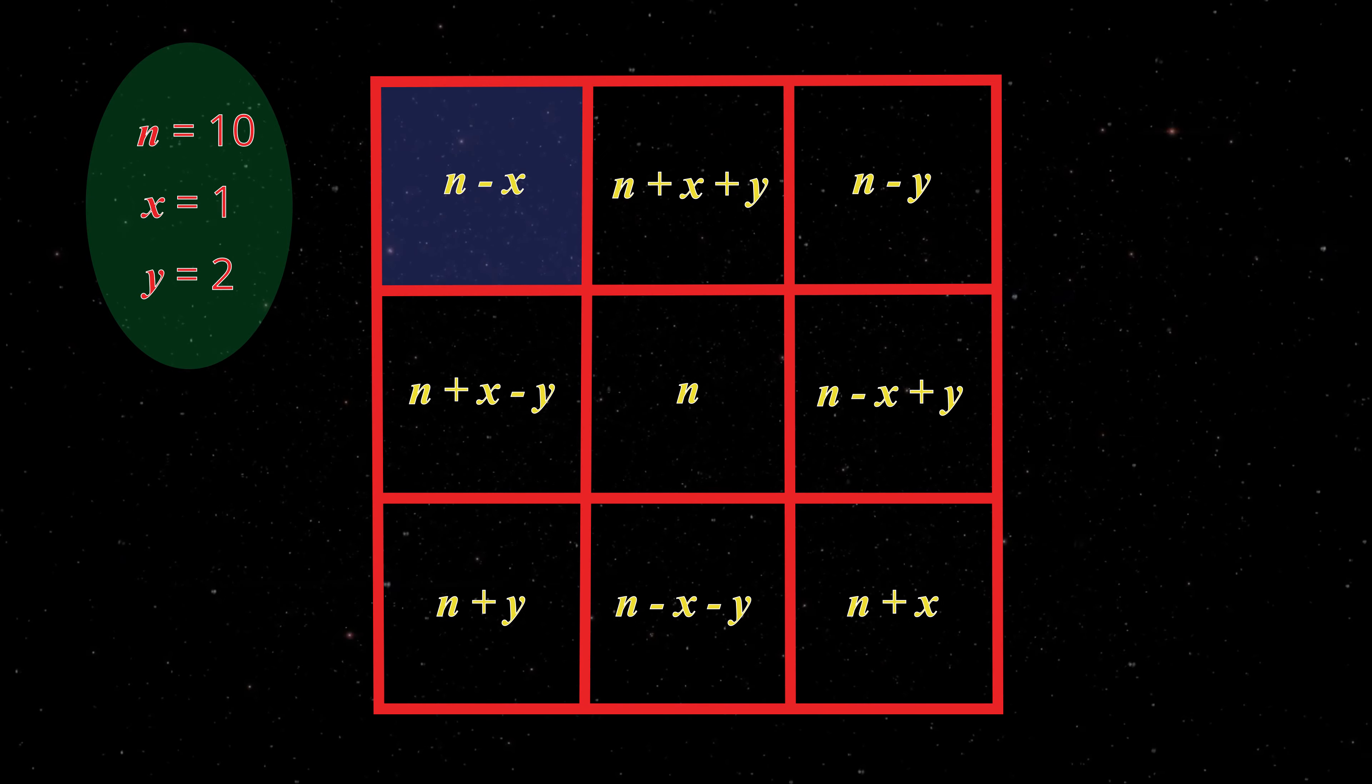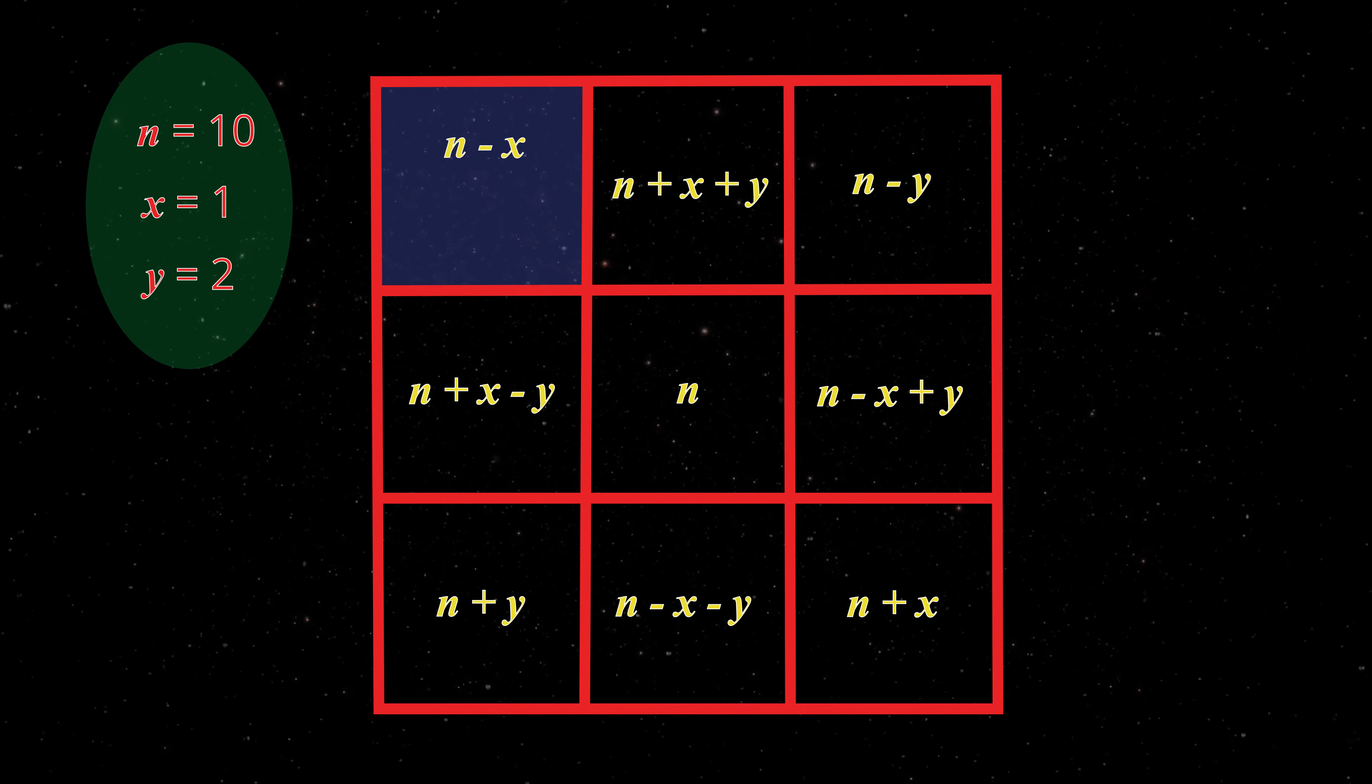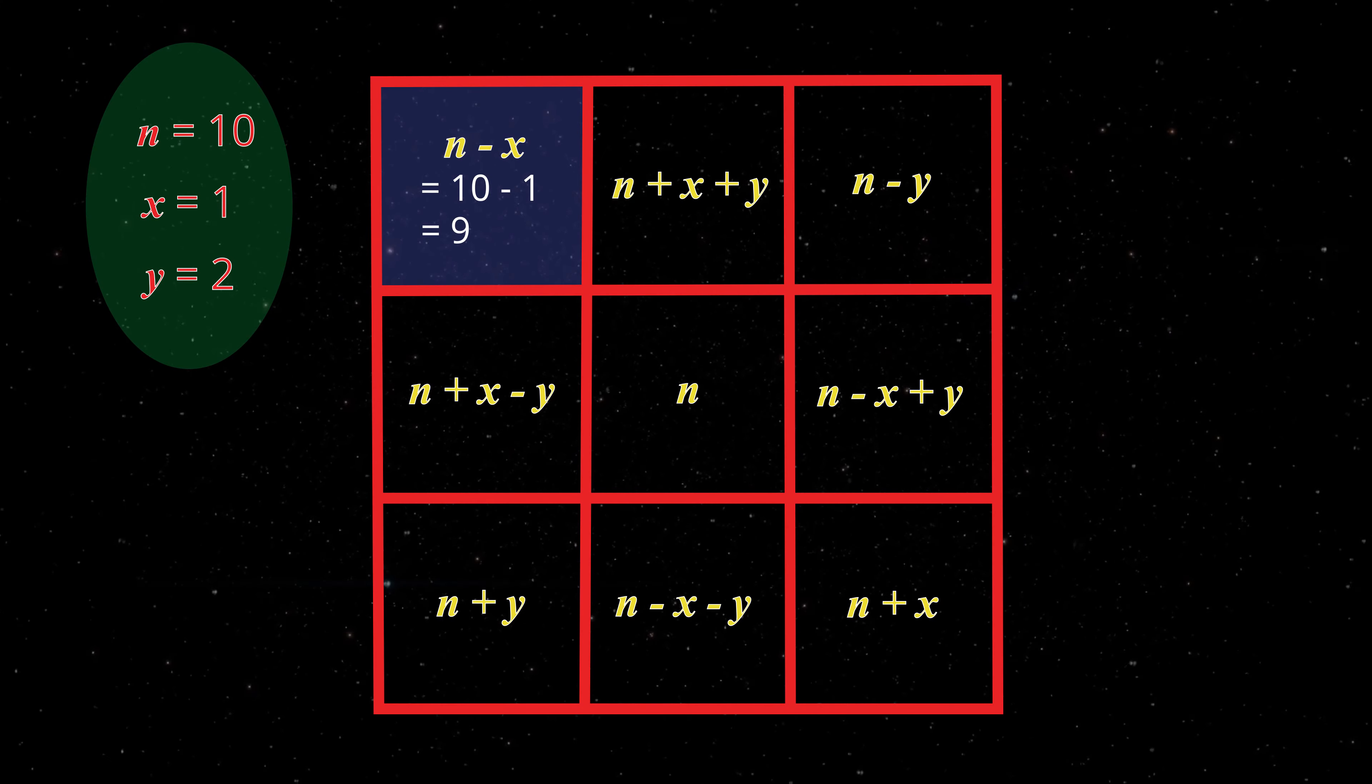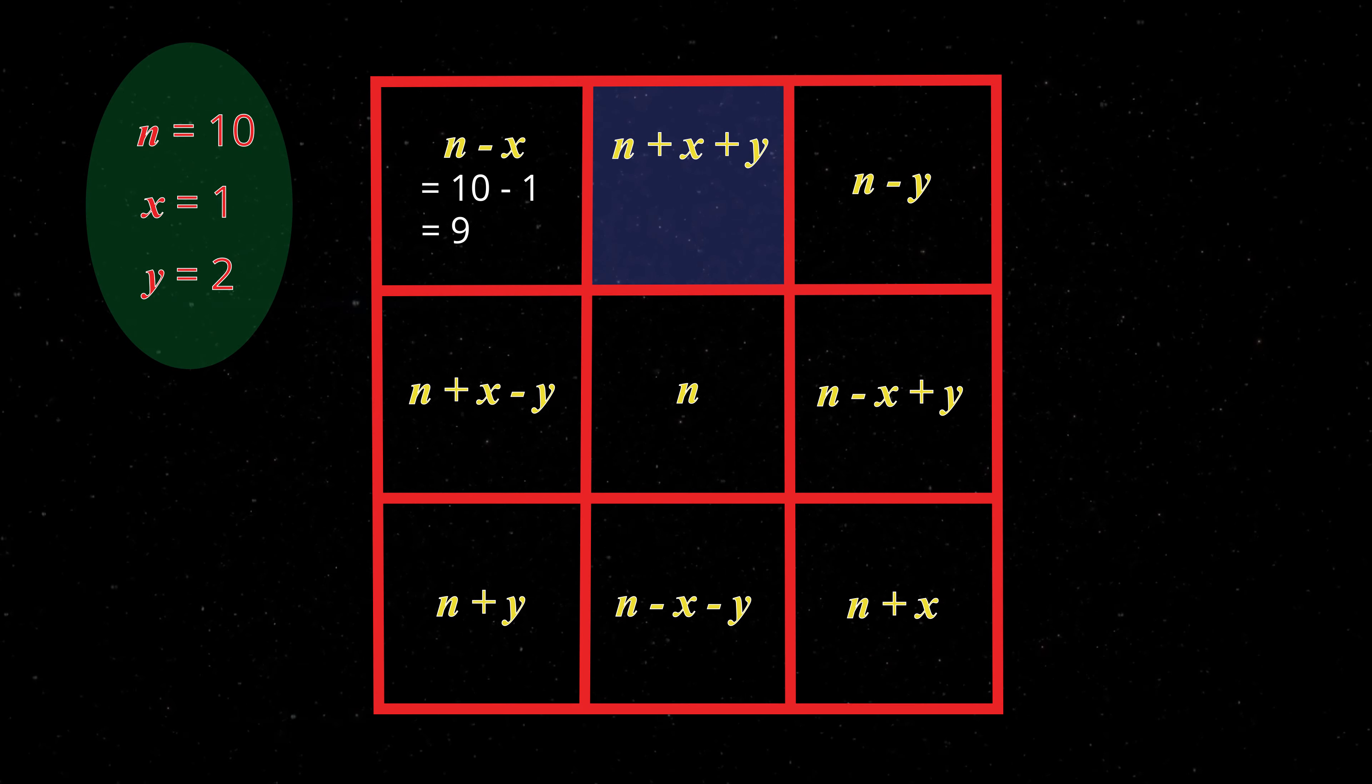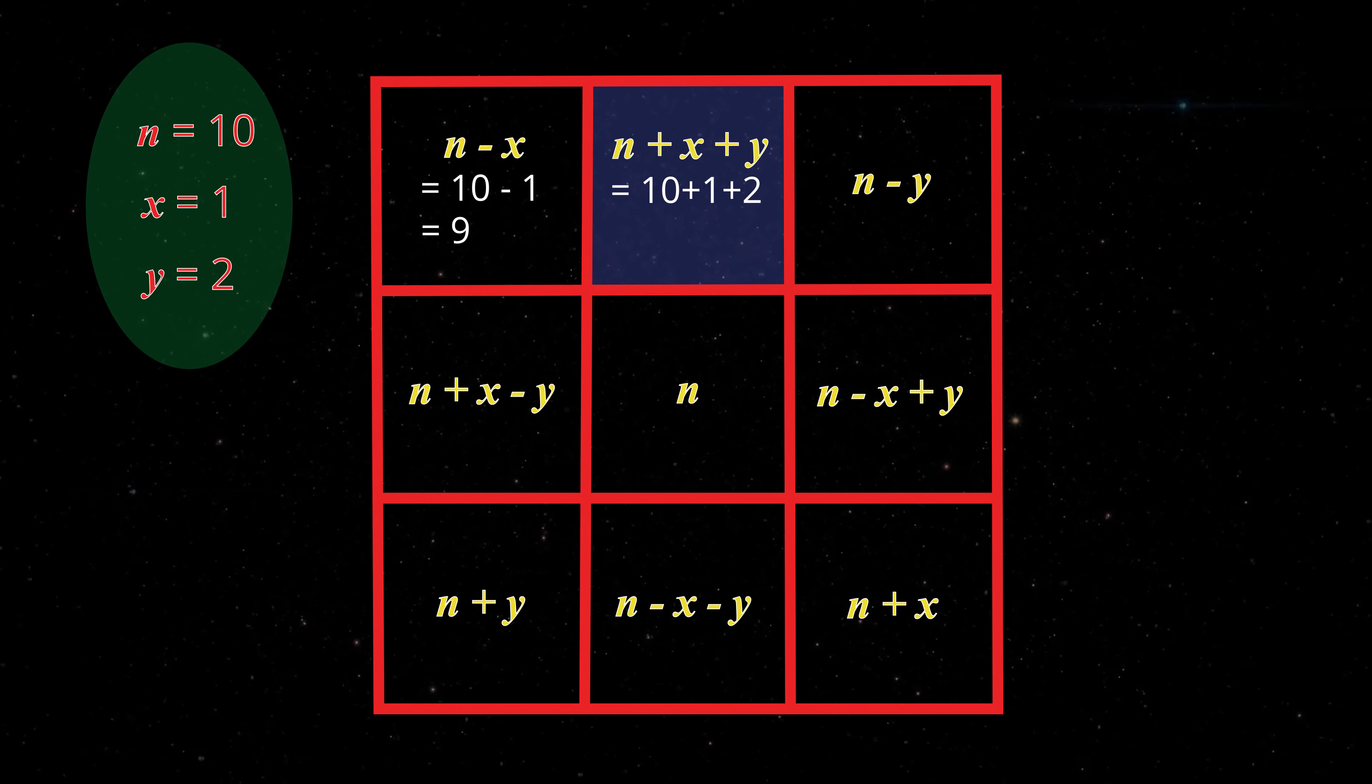Let's work out the top left box. n minus x equals 10 minus 1. That's 9. Now let's work out the top middle box. n plus x plus y is 10 plus 1 plus 2. That's 13.